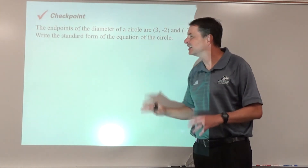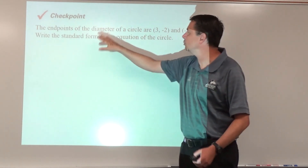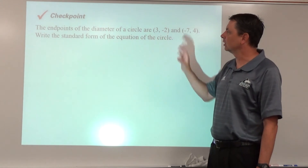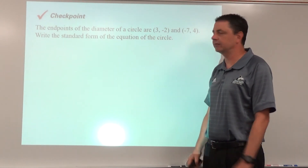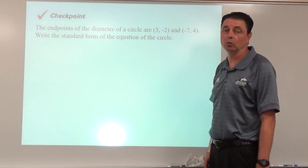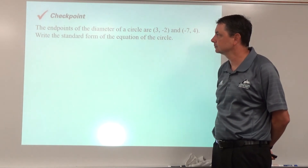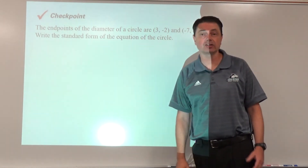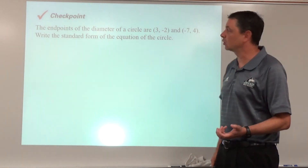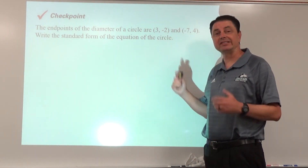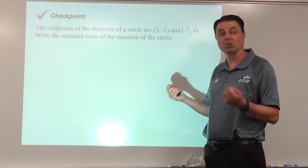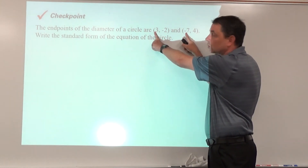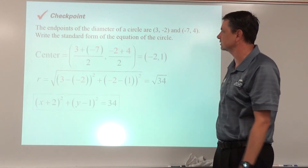Checkpoint: here the endpoints of a diameter are given — pause the video and write the standard form equation of the circle. Notice this doesn't directly give the center. Since the endpoints are on the diameter, the center must be the midpoint halfway between them, so we use the midpoint formula from yesterday: average the two x-coordinates and average the two y-coordinates.